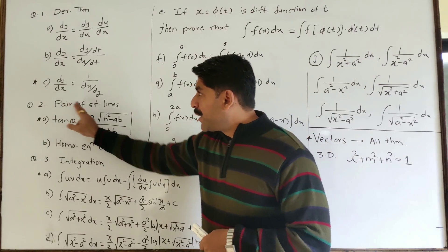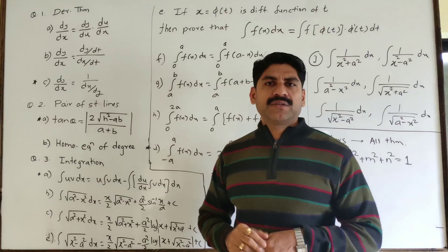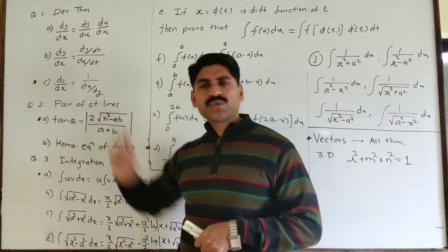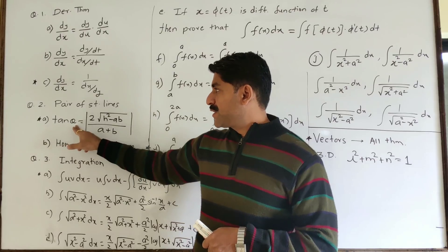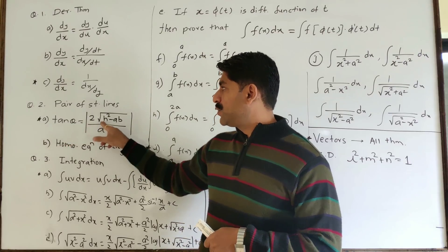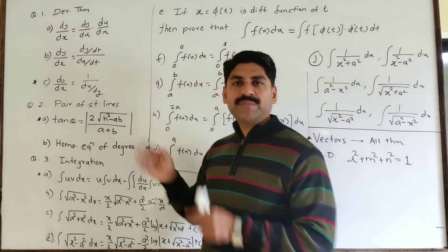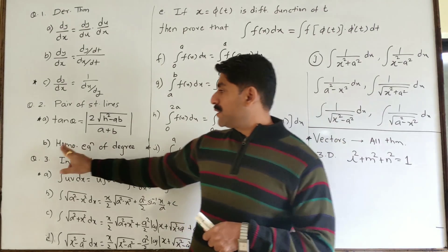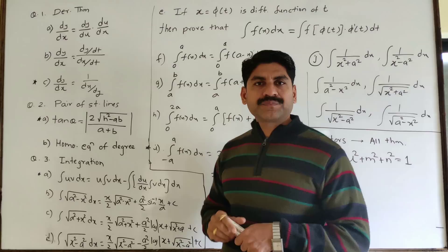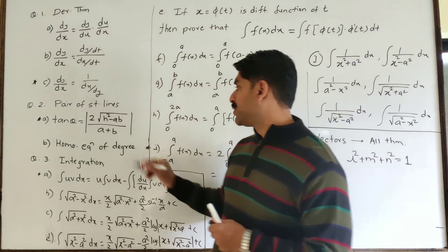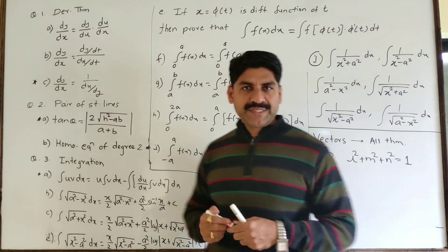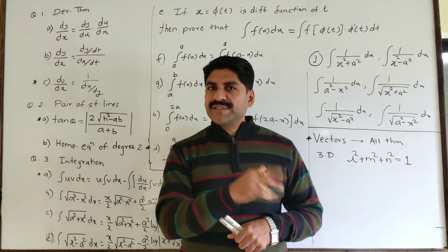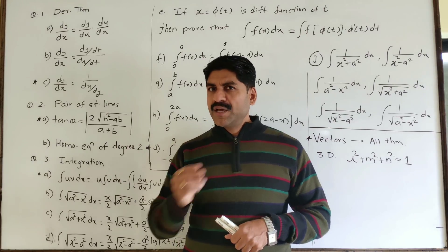Next, we have pair of straight lines with 2 theorems. The first theorem involves the angle theta — we have to use the formula: 2 under root of h-square minus ab upon a plus b. We have to prove this for the homogeneous equation of second degree. Then we have to prove case 1, case 2, and case 3.